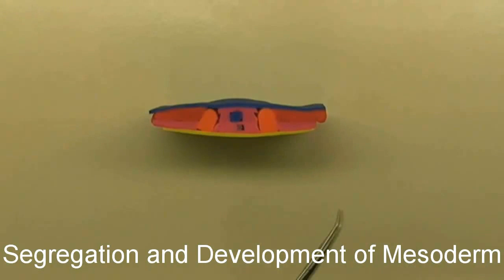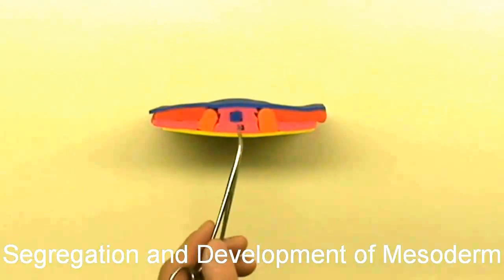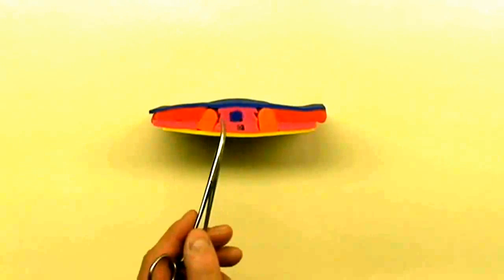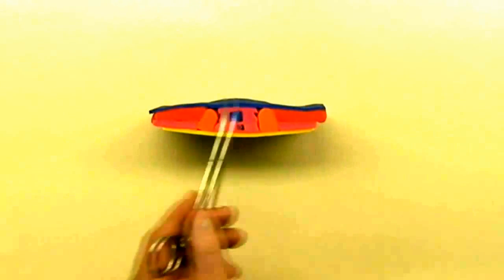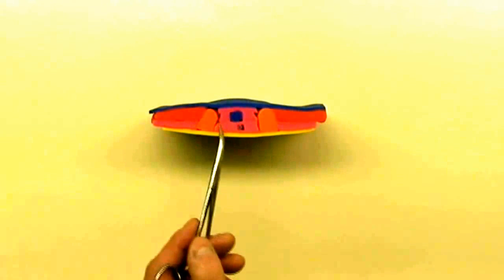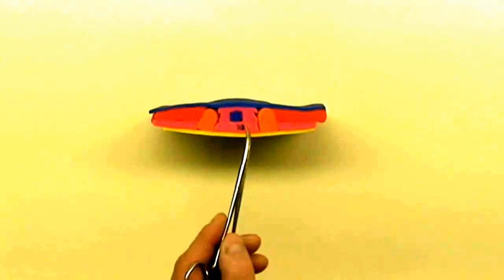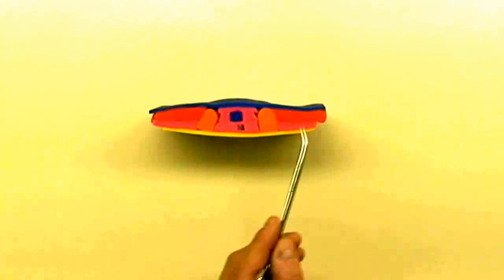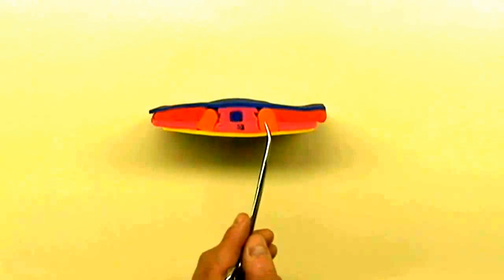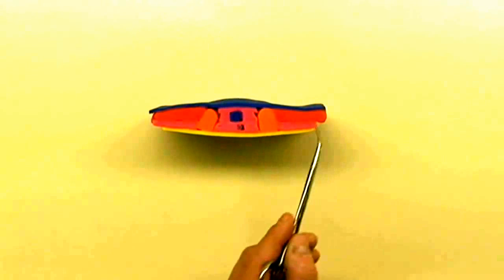Last time we talked about how, under the notochord's influence, we formed the neural tube, the true ectoderm which will form the dermis, then endoderm below, and segregation of mesoderm into somatic, intermediate, and lateral plate mesoderm.